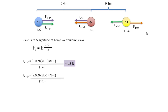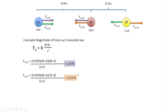Now we look at the force exerted by Q2 and Q3 on each other. K is still 9 × 10⁹, Q2 is 8 × 10⁻⁶, and Q3 is 7 × 10⁻⁶. The distance between these two is just 0.2 meters. We plug that in and square it — solving, we find that force is 12.6 newtons. Some of you might ask whether this should have been negative. Keep in mind, we're solving for the magnitude of the force, so magnitude is always the positive or absolute value.